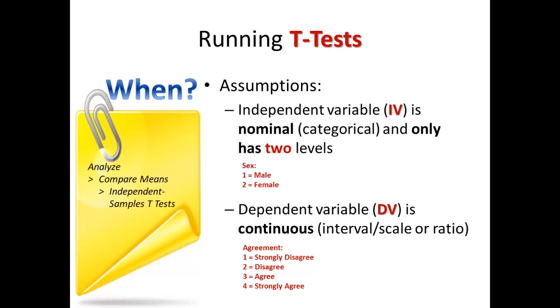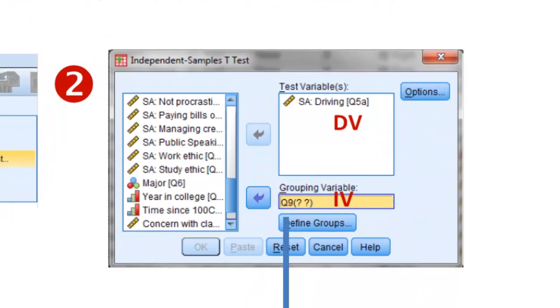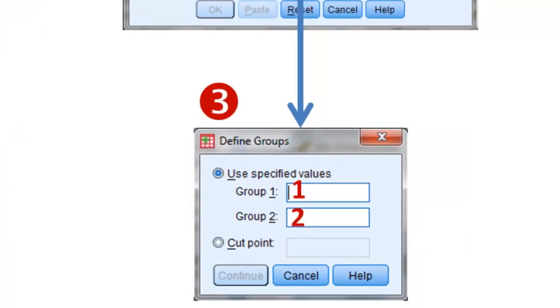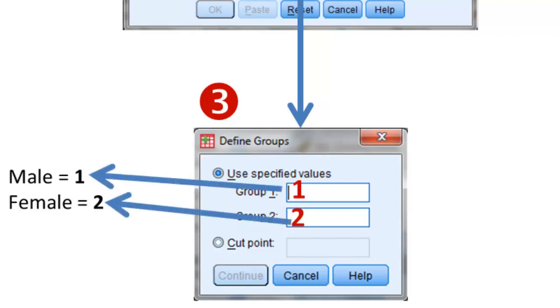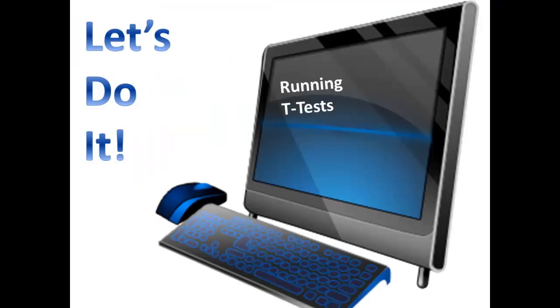Simple procedure: analyze, compare means, independent samples T-tests. There are a couple of things that you need to do once you get in there, but we'll talk about those in just a moment. These are the dialog boxes that you'll see when you're running a T-test. Note that the dependent variable goes under test variables and the independent variable goes in the grouping variables. You'll also have to identify the levels in the grouping variable that you want, and you'll notice that here, male is the first level and female is the second level. So let's do it.